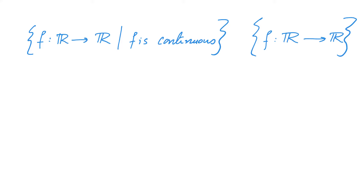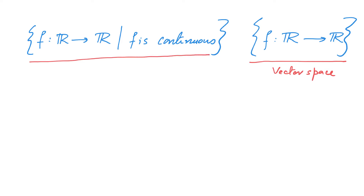We saw that the set of all functions from R to R is a vector space. Similarly, we saw that the set of all functions f from R to R such that f is continuous is also a vector space. Now notice that the set of all continuous functions is a subset of the set of all functions. As the set of all continuous functions is not just a subset but has some extra structure, we will say that the set of all continuous functions is actually a subspace of the set of all functions.